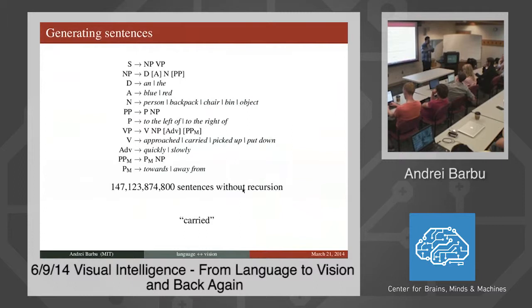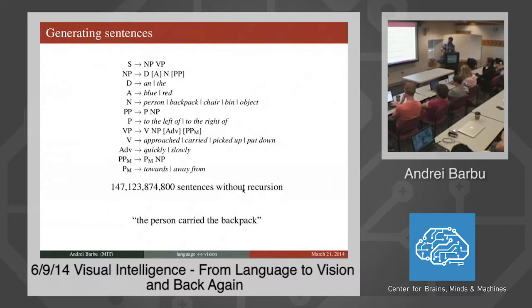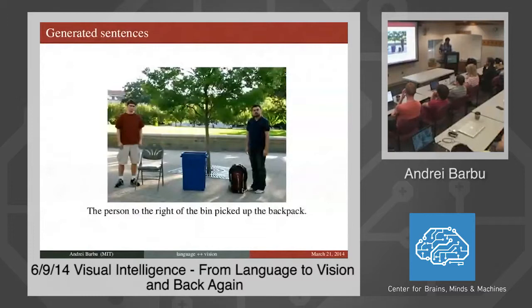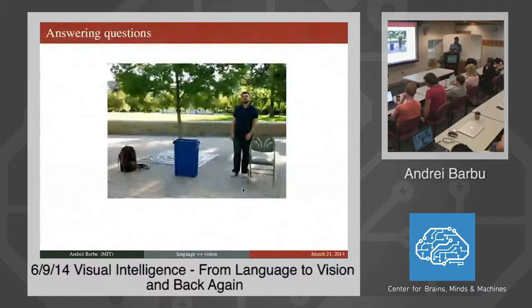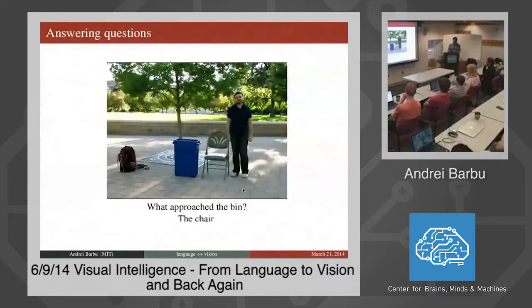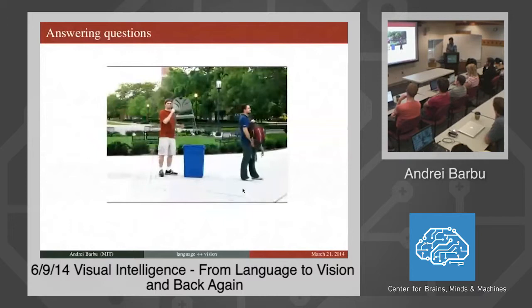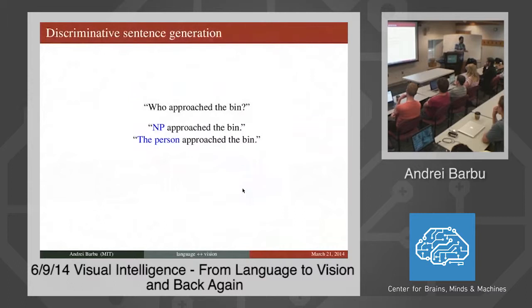The system can generate sentences like 'the person carried the backpack' or 'the person to the right of the bin picks up the backpack'. We can also answer questions. Given a video, if you ask 'what approached the bin?', it produces 'the chair'. For the question 'who approached the bin?', just saying 'the person' would be unhelpful since there are multiple people. So we feed the system a template specifying we want a noun phrase in the context that it must be approaching a bin.